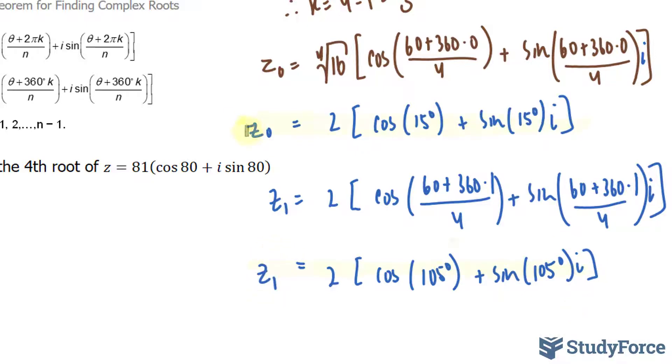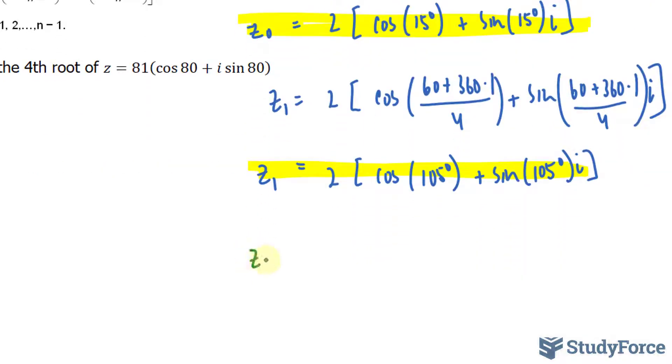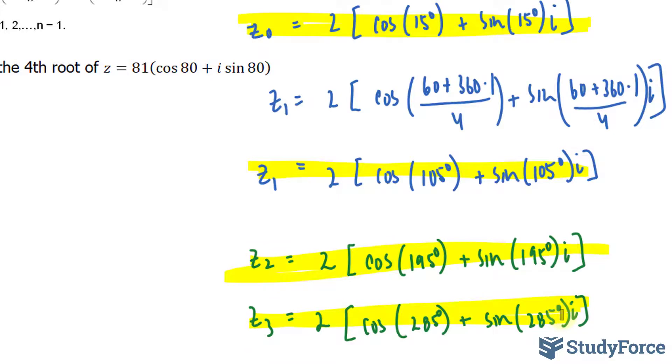I'll highlight these two answers, and if you do the rest correctly, you should end up with z₂ and z₃ values. Your expressions should look like this. What you see highlighted on your screen are the four complex numbers.